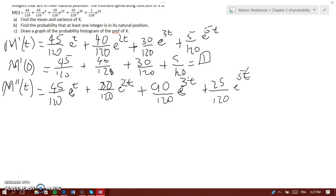And again, we make it at t equals 0. That becomes 45 over 120 plus 80 over 120 plus 90 over 120 plus 25 over 120. That will equal 240 over 120, which equals 2.